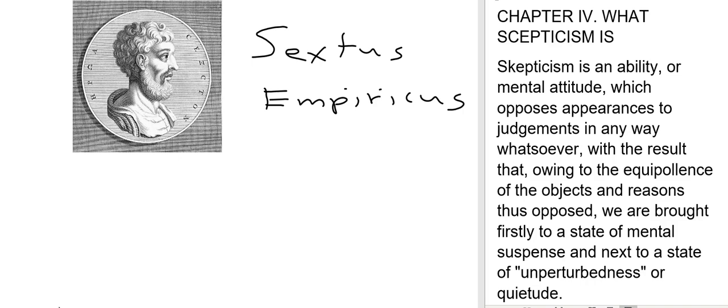Sextus lived somewhere around ancient Greece. He lived some 400-500 years after Plato and Aristotle, but the movement of skepticism, which he discusses, goes all the way back to ancient Greece.